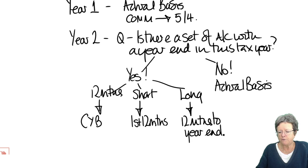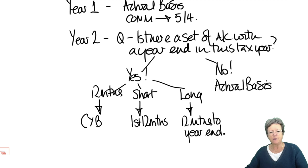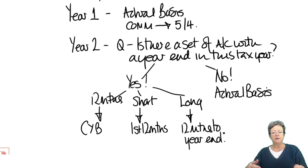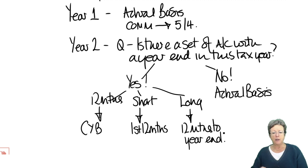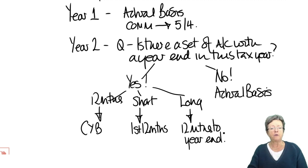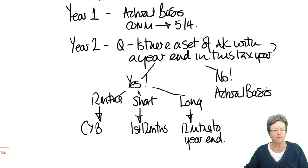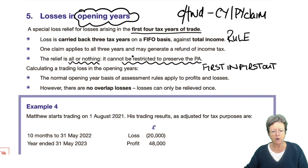And obviously, if you are not on a current year basis — and three of those four examples you're not — then you have to repeat that in Year 3 until you are on a current year basis. So that's a brief recap of those rules.